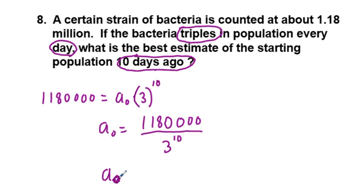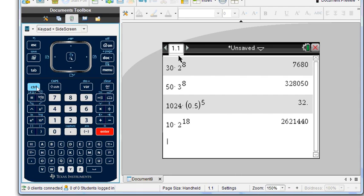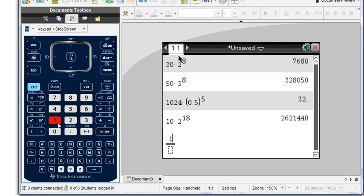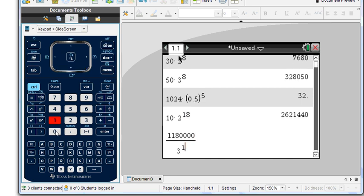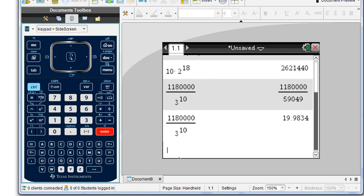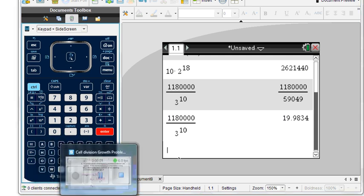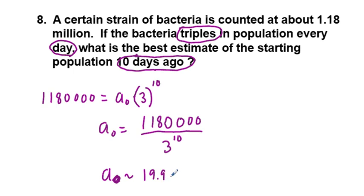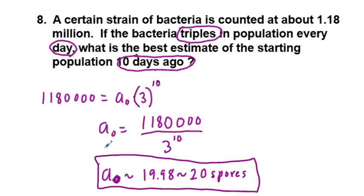So let's go ahead and solve for a sub 0. 1,180,000, okay is that the right number of zeros? I think it finally is, divided by 3 to the power of 10, and we get this improper fraction. And I'm going to press control enter to decimalize. We get about 19.98 spores. So we put down 19.98, which is approximately equal to 20 spores. If we had to say how many there were earlier, we would say 20 spores. We will leave that in place. So I had to do a little bit of algebra on that one.